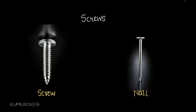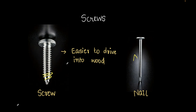Now, getting back to the screw and the nail: the screw is similar to that winding mountain road that goes up slowly, whereas the nail is similar to the straight mountain road. That is why it's easier to drill a screw into wood rather than a nail. The screw also doesn't easily get loose and provides much better grip.